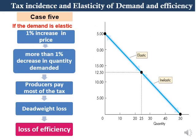Finally, Case 5 is elastic demand, which occurs when price is above the midpoint of the demand curve. Here, any percentage change in price leads to a higher percentage change in quantity demanded — for example, a 1% price increase leads to a 2% or more decrease in quantity demanded. In this case, most of the tax burden is paid by producers. Since we have a decrease in quantity demanded, we have deadweight loss and the tax is inefficient.